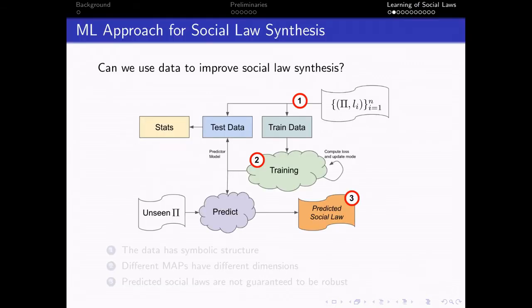And we also show that we beat the previous state-of-the-art. Let's consider the following very simple machine learning scheme, where we have some data, and of course we split it to test data and train data. We use the train data to train a model, and then we use the model to predict social laws for unseen multi-agent problems.